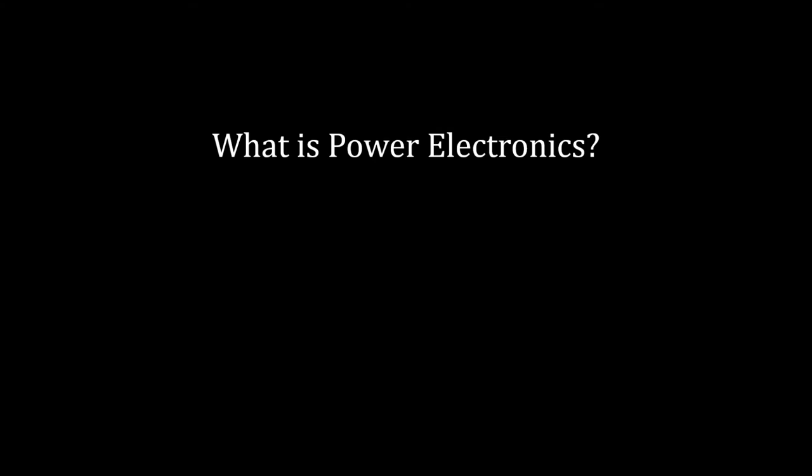So, what is power electronics? The simplest way I can say it is that power electronics are electronics which control the flow of power — it's in the name already. We have sources, things which produce power, and loads, things which consume power. Power electronics are what we put in between sources and loads to control that flow. Sometimes the idea of a source and a load isn't so clear-cut since power flows in multiple directions, but in any case, electronics which control power flow are power electronics.